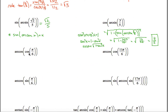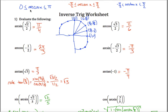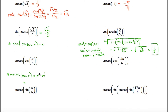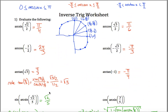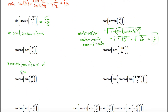The arc cosine of the cosine of pi over 6. Arc cosine of cosine of x equals x if that x falls in the range 0 to pi. I got lucky — pi over 6 is between 0 and pi, so this is just pi over 6.